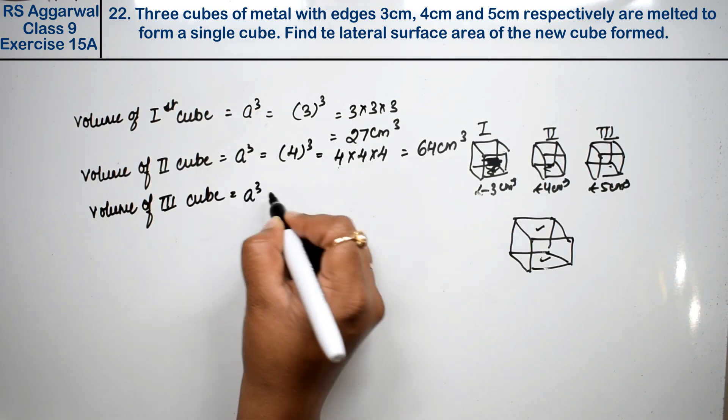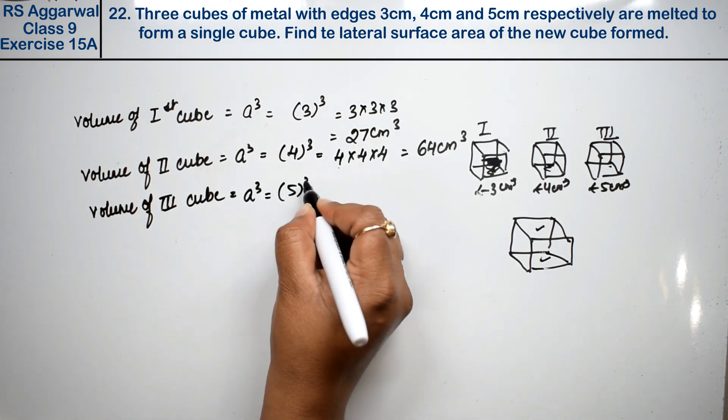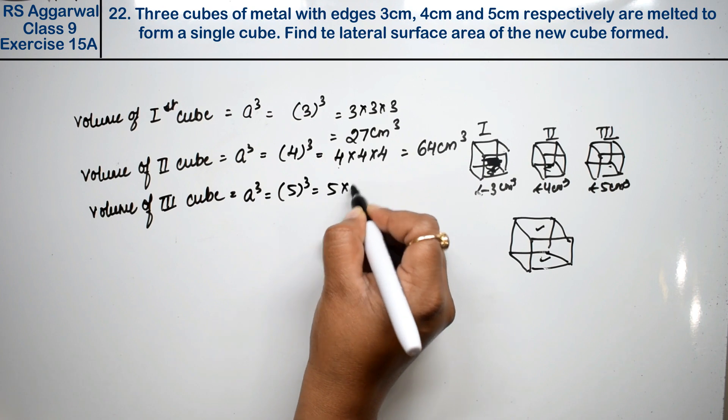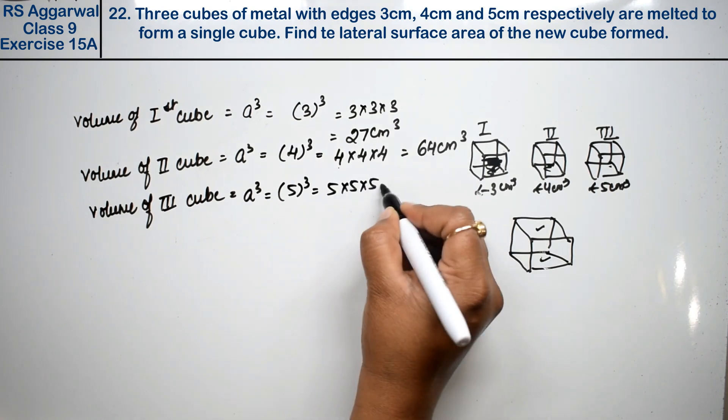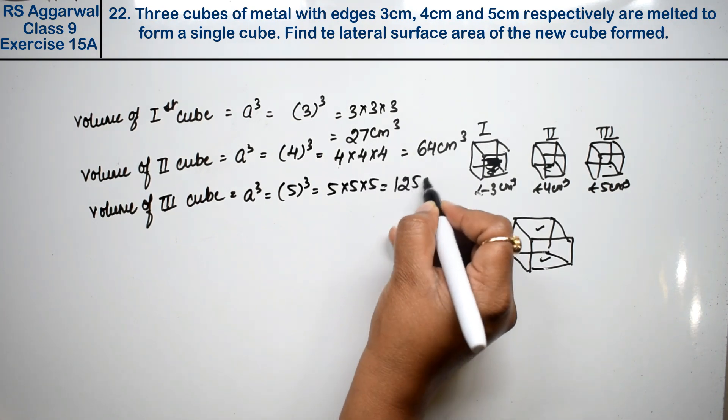Volume of third cube: 5 whole cubed, 5 into 5 into 5, this is 125 cm cube.